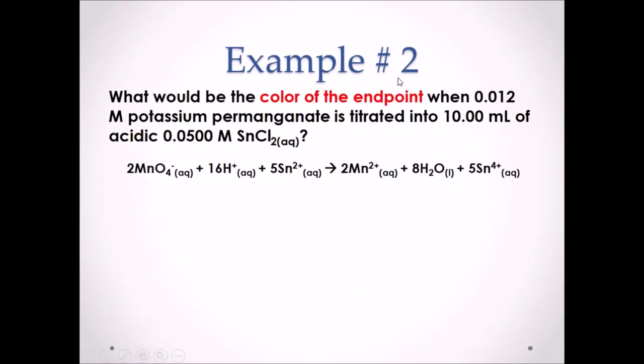Example number 2. What would be the color of the endpoint when 0.012 moles per liter potassium permanganate is titrated into 10 milliliters of acidic 0.05 moles per liter tin chloride? Pause the video and attempt this example.